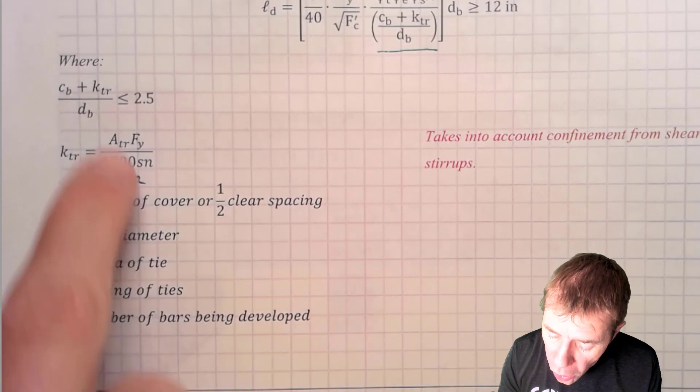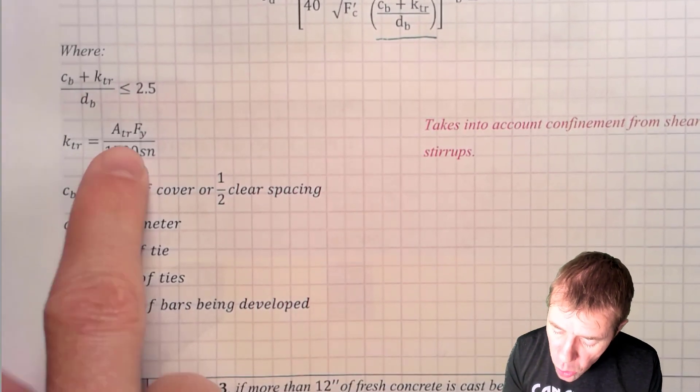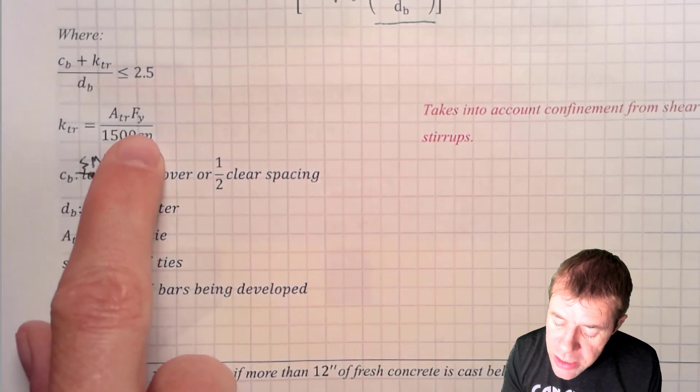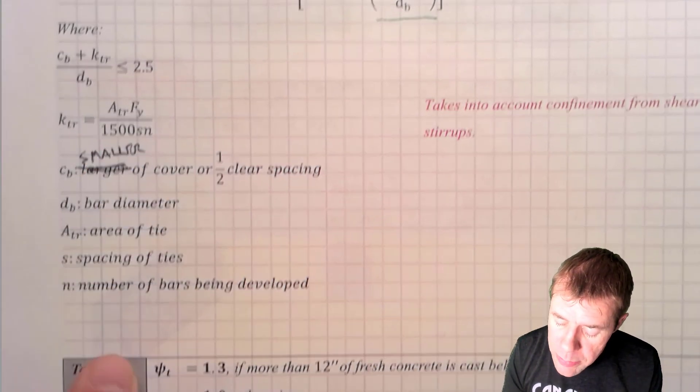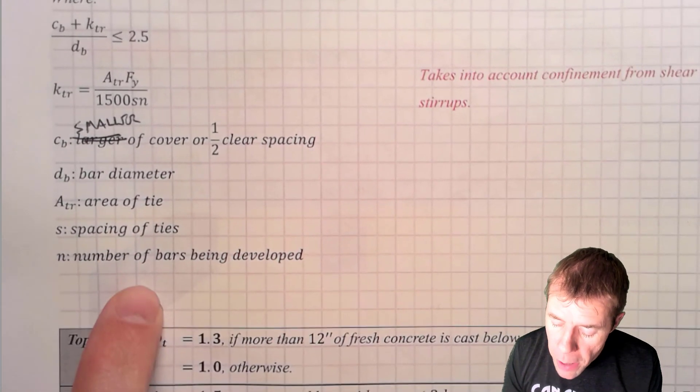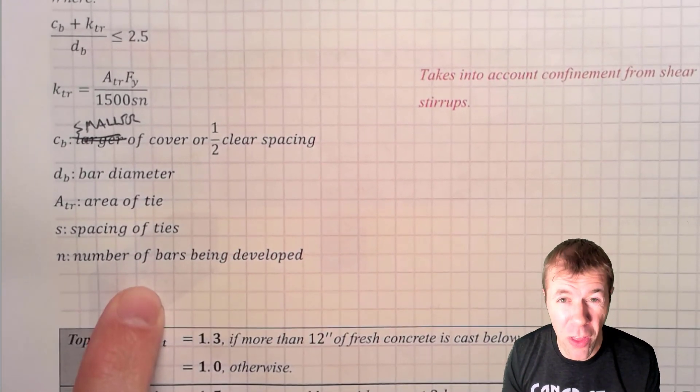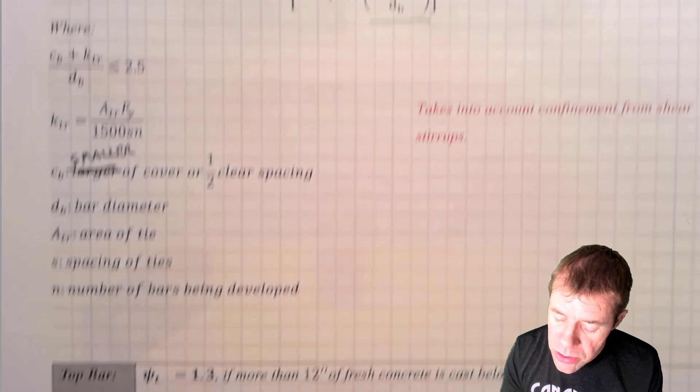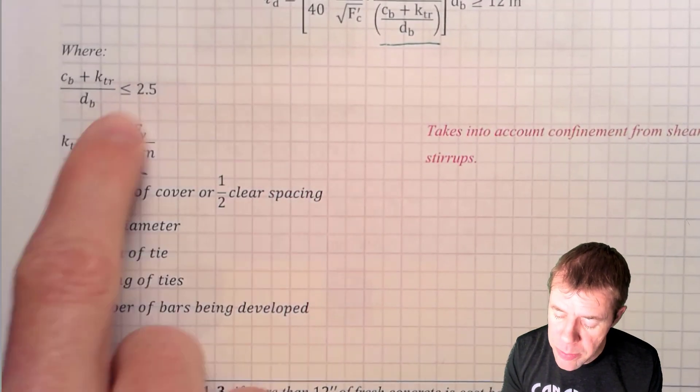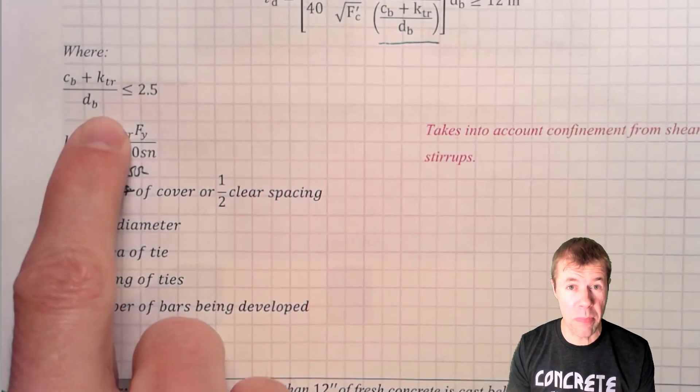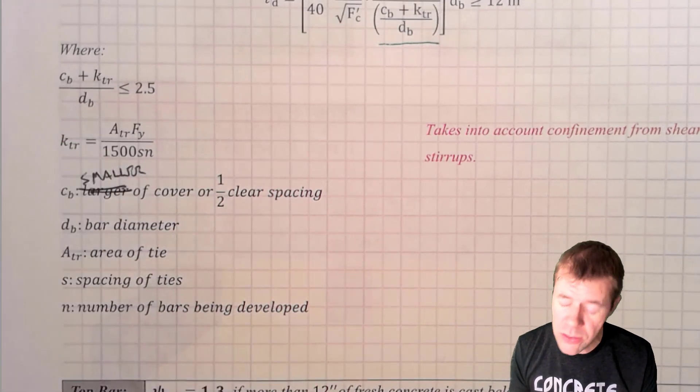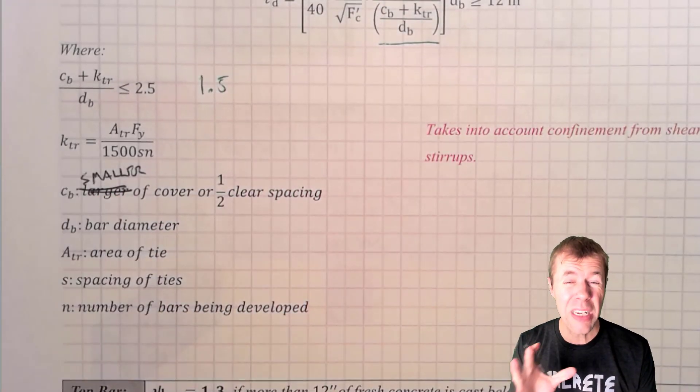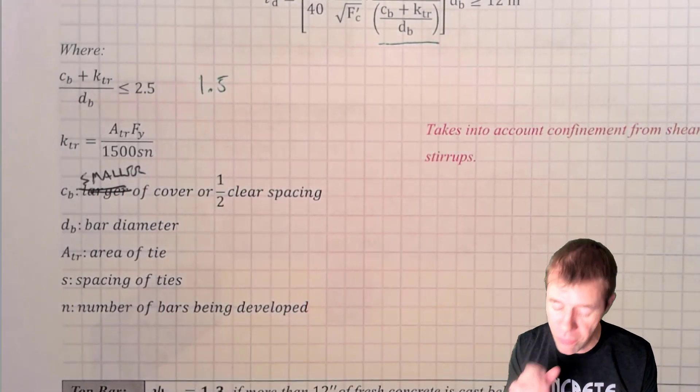Then we have our KTR. That is something called ATR. That is the area of your tie. Usually a number 4 bar times your FY divided by 1500 times the spacing of the ties times the number of bars being developed. That again will make more sense once I show you a worked example and all of this is divided by the diameter of your bar and it has to be less than 2.5. Hey, a good estimate for all of this, if you don't have any of this information, is 1.5. If you don't know these things, you can just estimate it's about 1.5 or so.